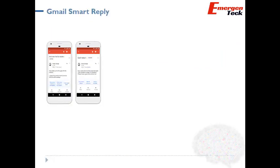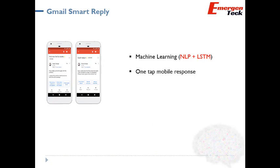This use case is all about how Google has implemented the Smart Reply feature using Artificial Intelligence, NLP, and the LSTM model to scan the email and suggest the best possible responses — helping Gmail users avoid typing on their mobile. It also helps generate diversified semantic responses for a complete one-step mobile response, making it an end-to-end system for generating short email responses on mobile.